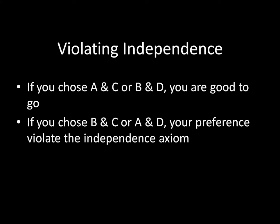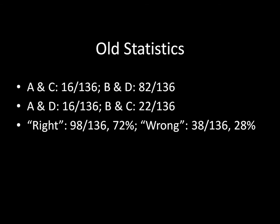I've done this before. Out of 136 respondents, 16 chose A and C, and 82 chose B and D — that's 98 out of 136, or 72% of people choosing the answer that does not violate independence. But 16 people chose A and D, and 22 people chose B and C — the answer that violates independence. So a full 28% of the time, we had individuals whose preferences violated independence.